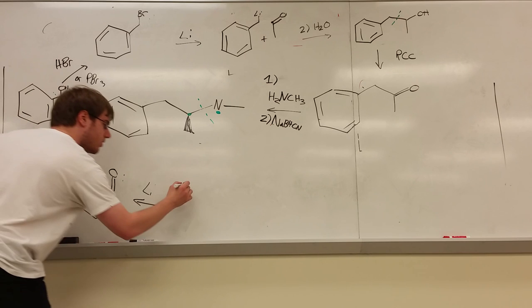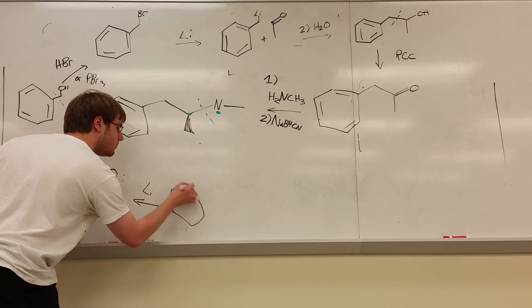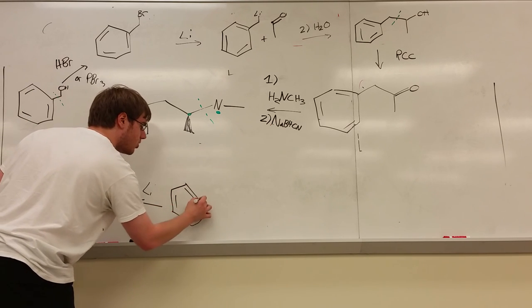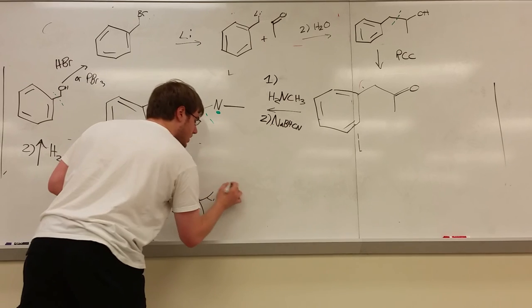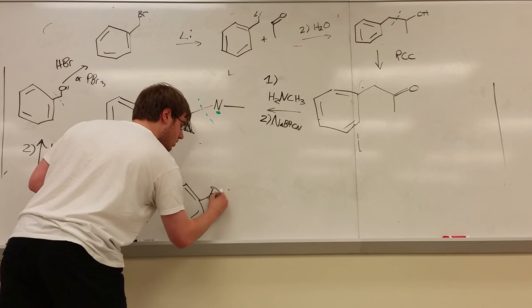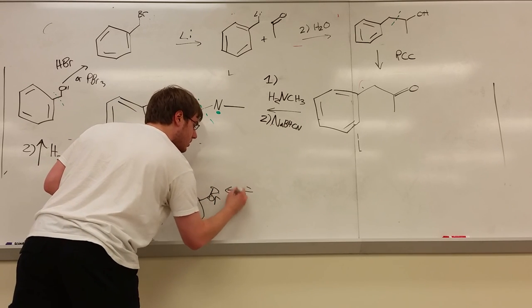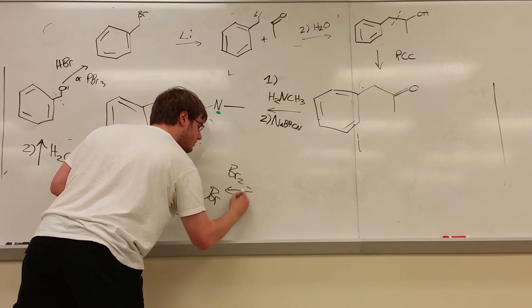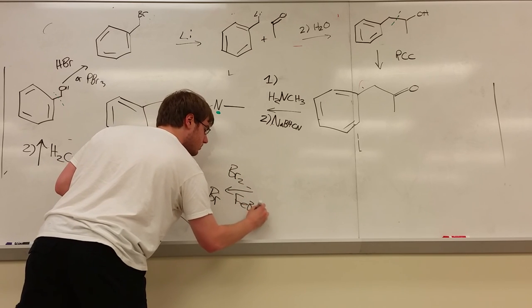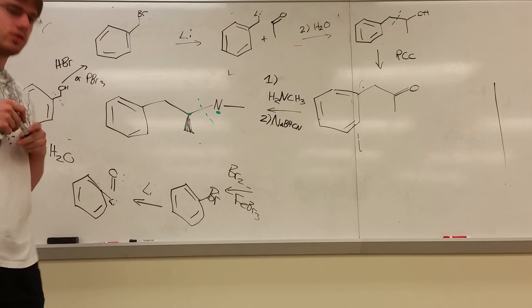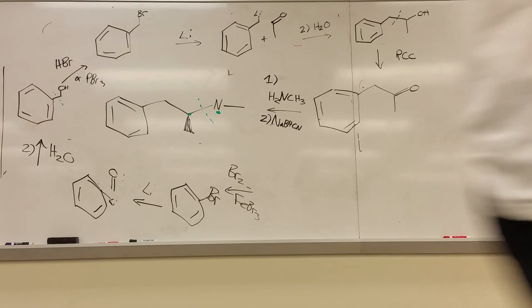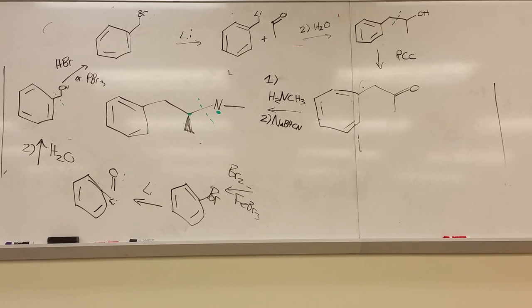Lithium over the arrow will turn that lithium again into a bromine. And now we have a way of adding bromine to benzene by doing Br2 and FeBr3. And that's your synthesis.